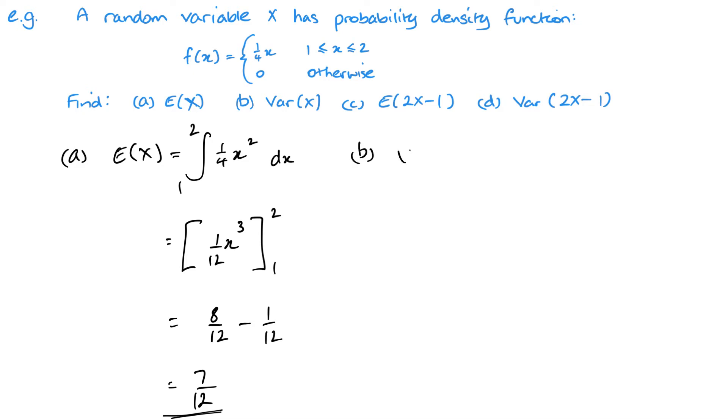Now with the variance, of course we need to multiply by x squared, so my one quarter x becomes one quarter x cubed between 2 and 1. Once I've integrated that, I need to subtract my mean squared, which I've already worked out as 7 twelfths. We'll do the integration first, so add one to my power, divide by that power, so it's going to be 1 over 16 x to the power 4, and then I'm going to be minusing 7 over 12 squared.